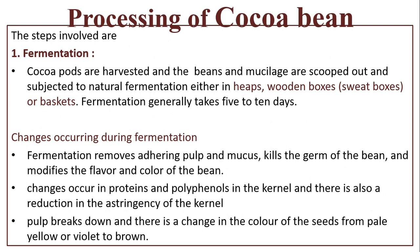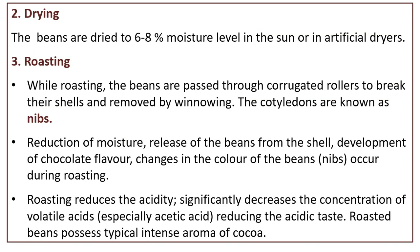Changes occurring during fermentation: fermentation removes adhering pulp and mucus, kills the germ of the bean, and modifies the flavor and color of the bean. Changes occur in proteins and polyphenols in the kernel. There is also a reduction in the acidity of the kernel. Pulp breaks down and there is a change in the color of seeds from pale yellow or violet to brown.